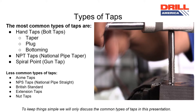Spiral point taps, which are also called gun taps, are also among the most common types. There are many other less common types of taps, including Acme, NPS, British Standard, extension taps, and nut taps.